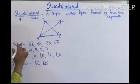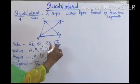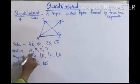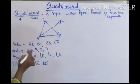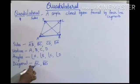So a quadrilateral has four sides, four vertices, four angles, and two diagonals.